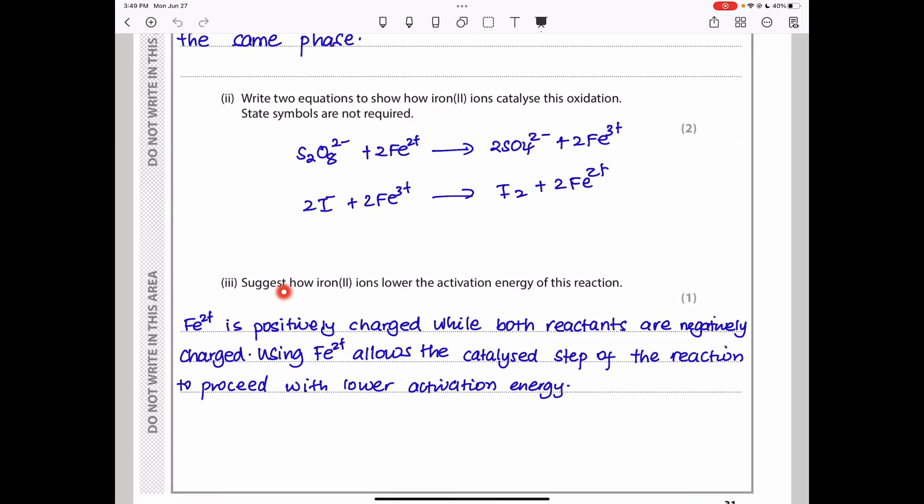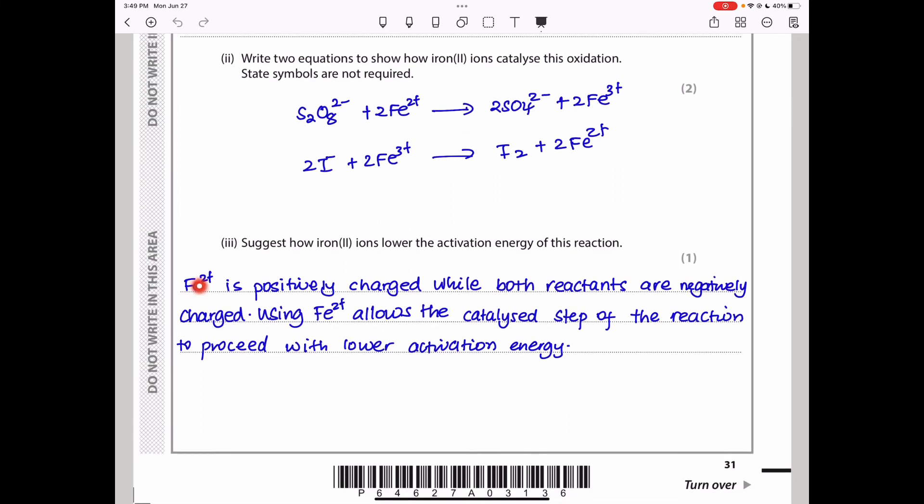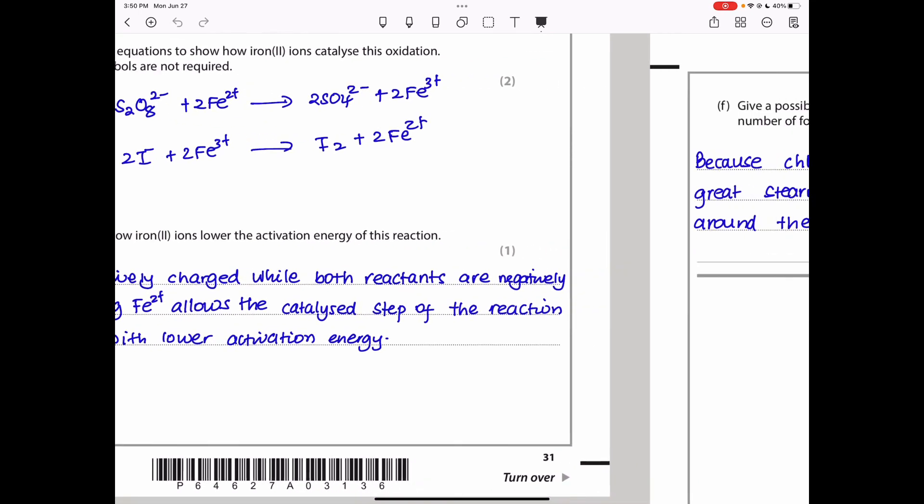Suggest how Fe2+ ions lower the activation energy of this reaction. Here we can see, I said: Fe2+ is positively charged while both reactants are negatively charged so they will repel each other. However, using Fe2+ allows the catalyzed step of the reaction to proceed with lower activation energy. The reason for this is there will be less repulsion and the reactant and the added catalyst will combine because they are oppositely charged. So, that catalyzed step is going to be really fast and efficient.